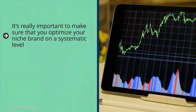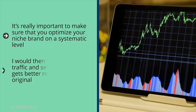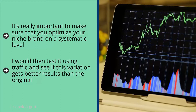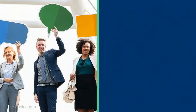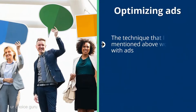Optimize your brand systematically. It's really important to optimize your niche brand at a systematic level. Optimization takes place on two fronts: content/traffic and monetization. I use the following technique: divide whatever I'm trying to optimize into elements. Take one element, start with the original version, and make variations. Test it using traffic and see if a variation gets better results than the original. Take the winner and make variations of that. Keep picking variations that get better results until you find no further improvements, then switch to the next element and repeat the process.